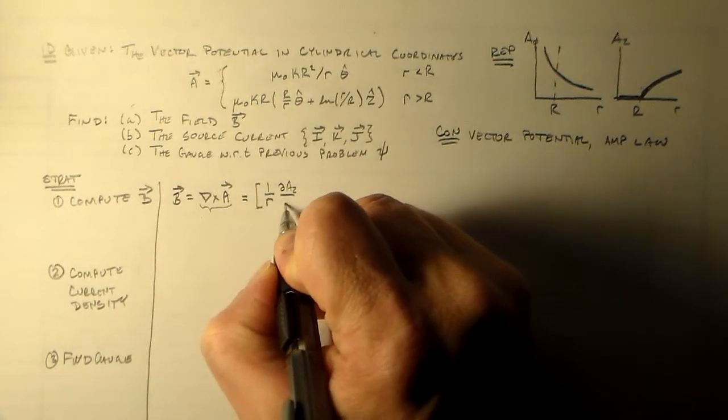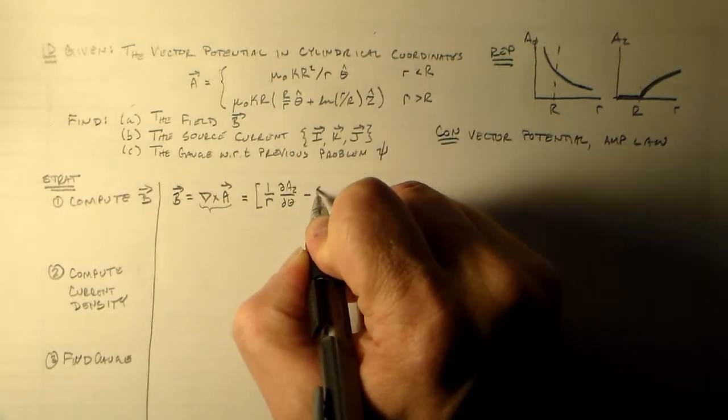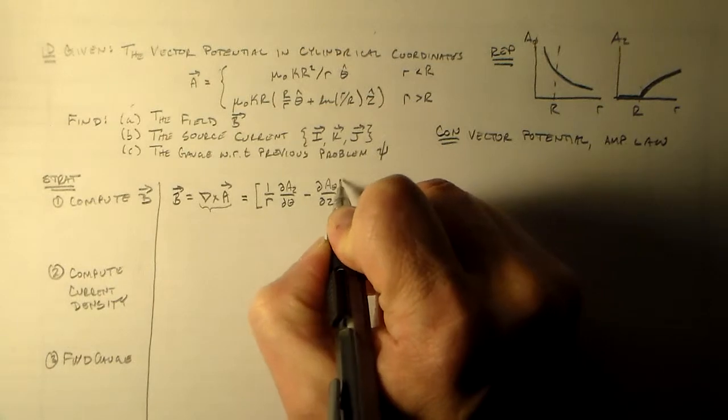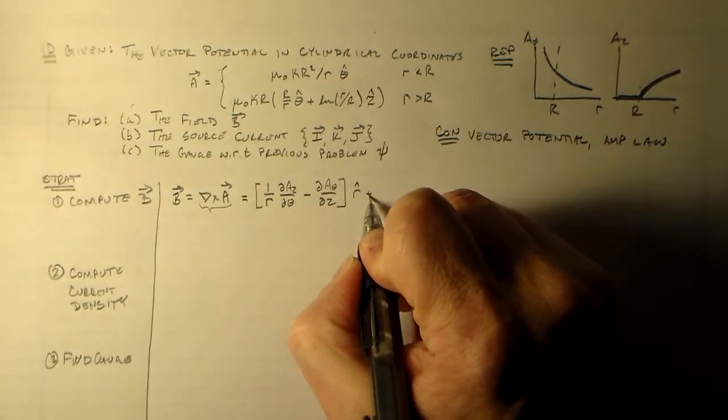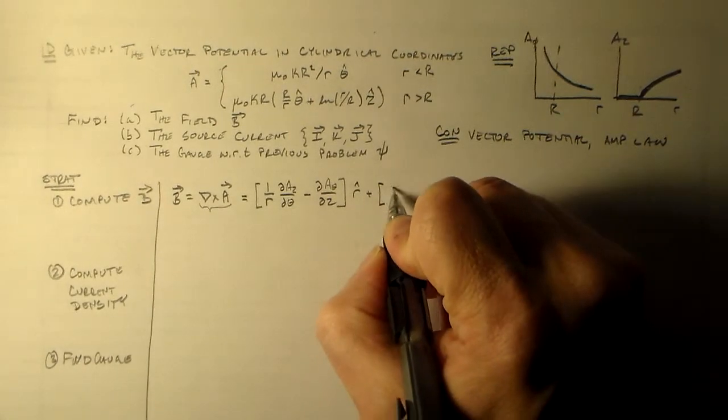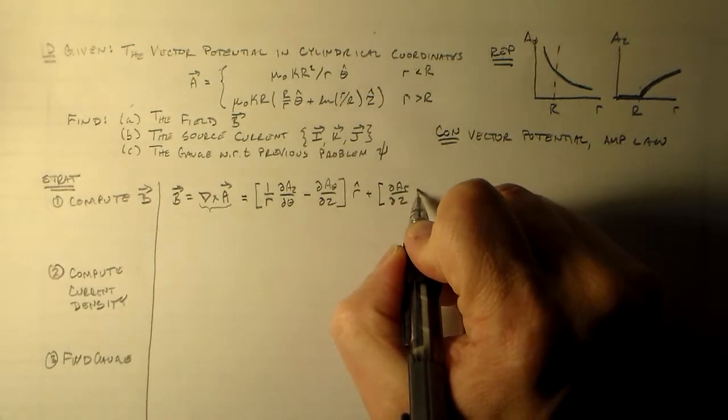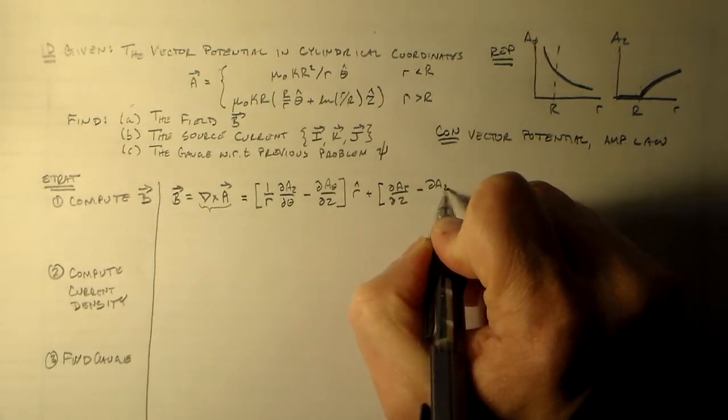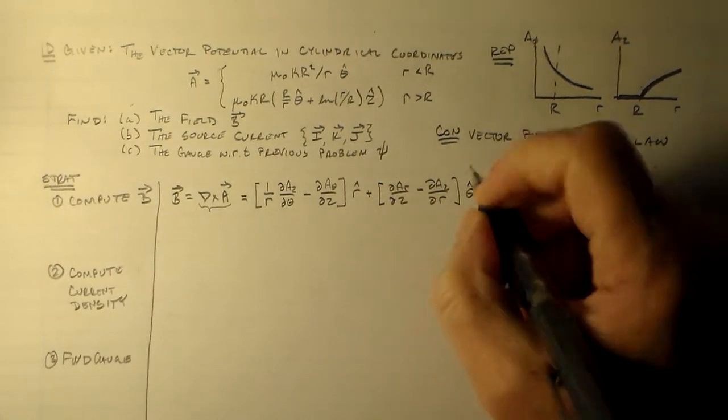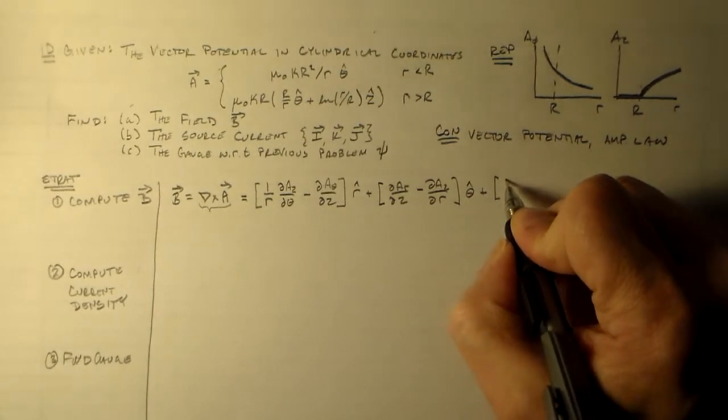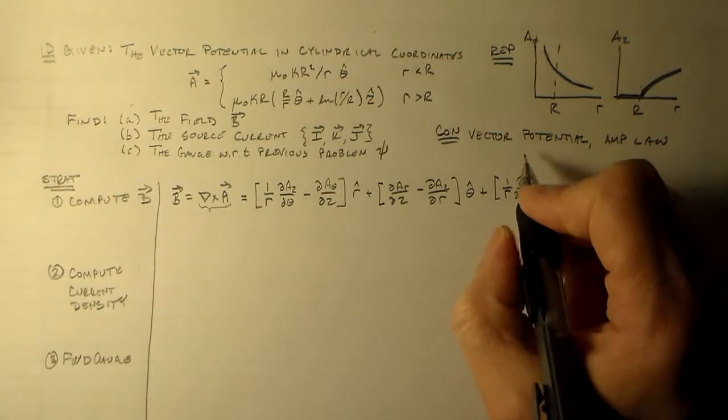So it's 1 over r times dAz d theta minus dA theta dZ in the r hat direction. Plus, in the theta hat direction, dA r dZ minus dAz dR. That's in your theta hat direction.